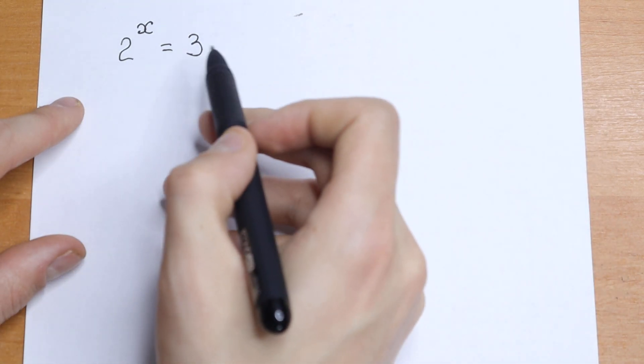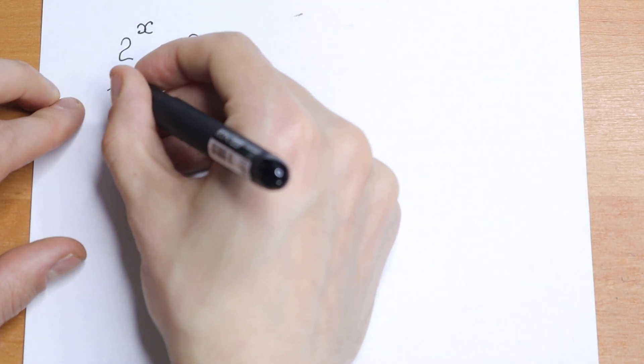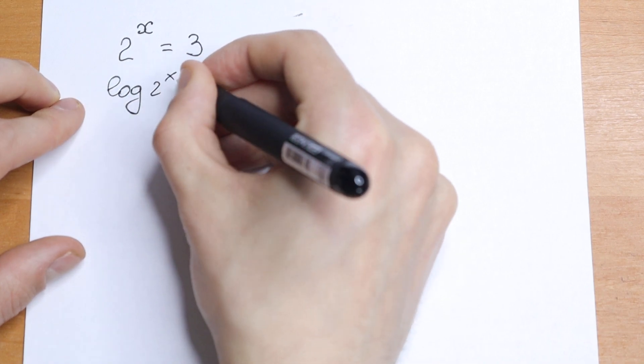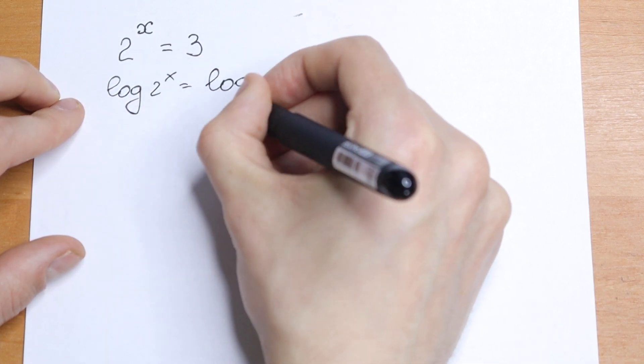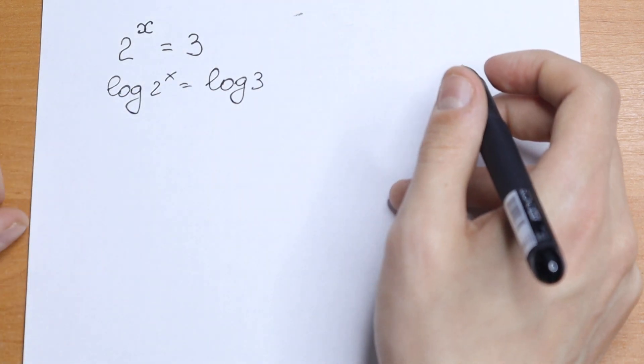Let's take log from both sides. What we will have? We will have log of 2 to the x equal to log 3. Taking log from both sides.